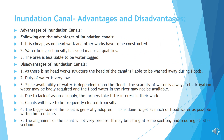Advantages and disadvantages of inundation canals. Advantages: first, it is cheap as no headworks and other works have to be constructed; second, water being rich in silt has good manorial qualities; third, the area is less liable to be waterlogged. Disadvantages: first, as there is no headwork structure, the head of the canal is liable to be washed away during floods; second, duty of water is very low; third, since availability of water is dependent upon floods, scarcity of water is always felt, and irrigation water may be badly required when flood water in the river is not available; fourth, due to lack of assured supply, the farmers take little interest in their works; fifth, canals will have to be frequently cleared from silt; sixth, a bigger size of canal is generally adopted to get as much flood water as possible within a limited time; seventh, the alignment of the canal is not very precise and it may be silting at some sections and scouring at other sections.